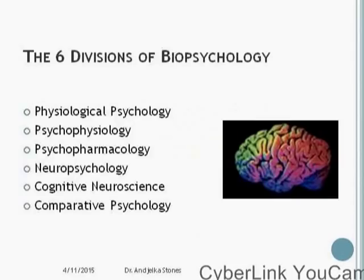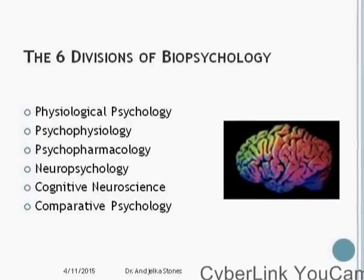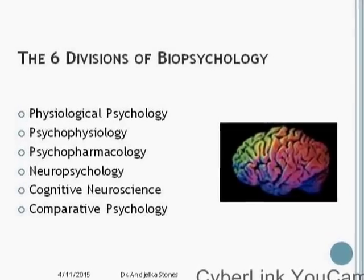There are six divisions of biopsychology: physiological psychology, psychophysiology — which are not identical by any means — psychopharmacology, cognitive neuroscience, and comparative psychology. I will go through each one in turn in a minute.